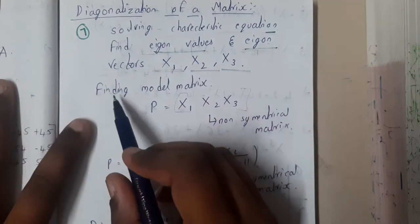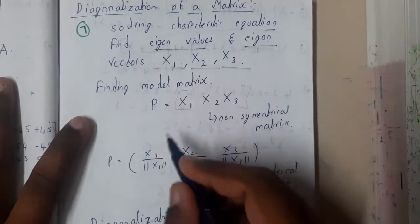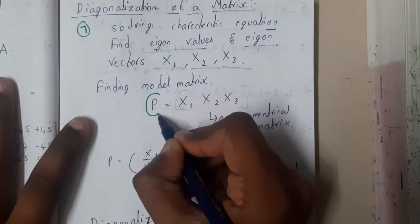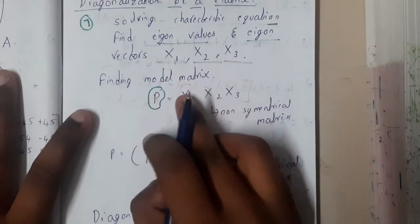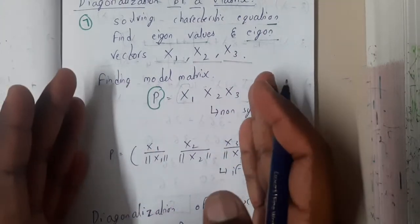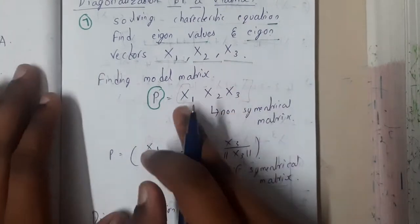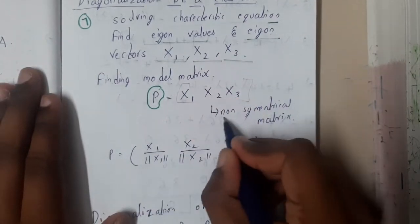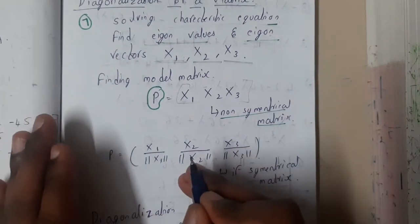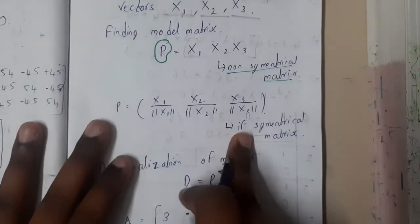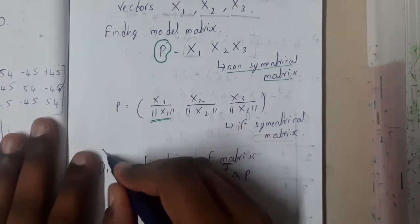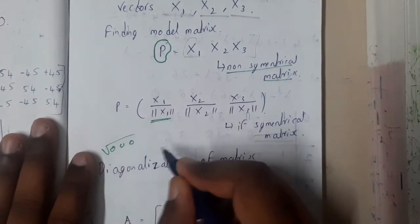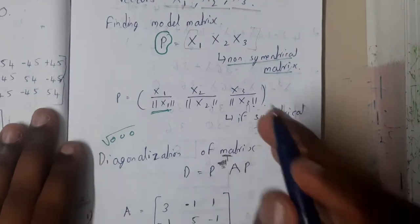Based on that you will be finding the modal matrix. Modal matrix is represented with the symbol P. That P is nothing but X1, X2, X3 in terms of matrix. If it is a non-symmetric matrix, if it is a symmetric matrix you will be dividing it with the norm. Norm is nothing but under root of its squares.